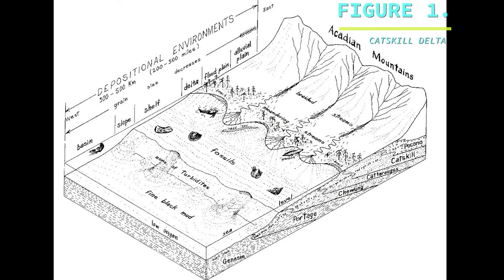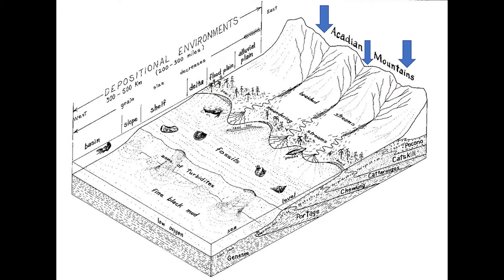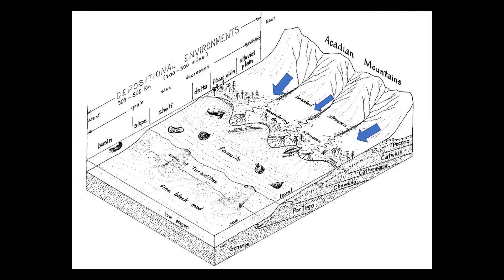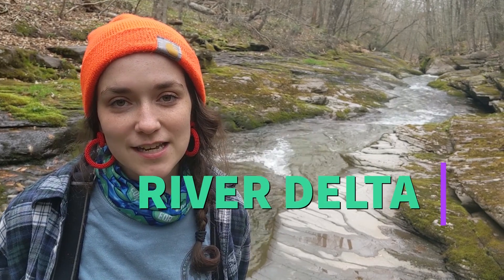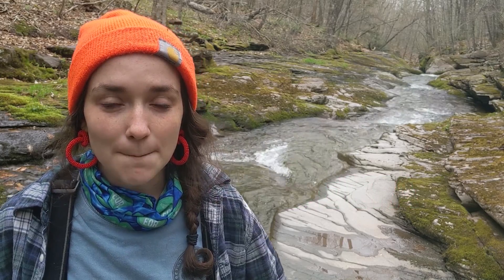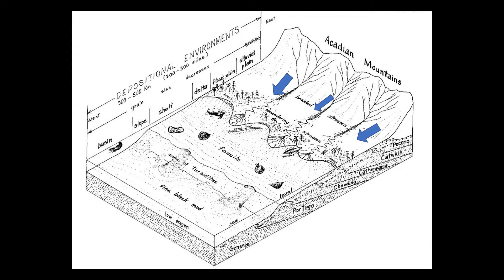The Devonian rivers and streams erode or wear down the peaks of the Acadian Mountains. The rivers and streams transport the eroded material downstream and deposit the material along the river channels and the nearby floodplains. As the rivers finally flow into the slow-moving, shallow sea, they deposit their remaining material forming a delta. A river delta is a landform created when the mouth of a river meets slower moving or still water and the river deposits its sediment. Over time, this process of deposition along the river channels, floodplains, and delta creates a layer of sediment over a mile thick known as the Catskill Delta Complex.